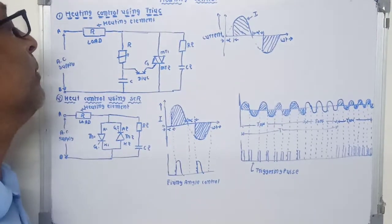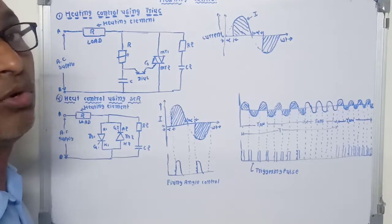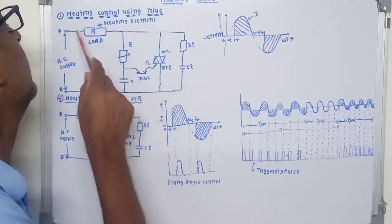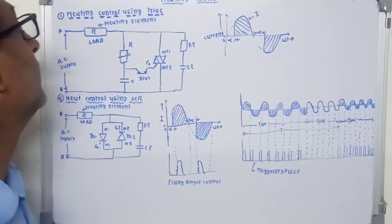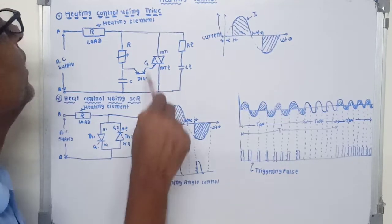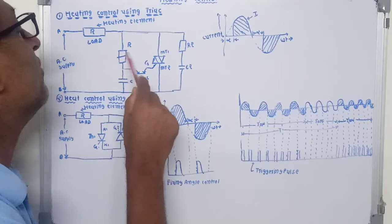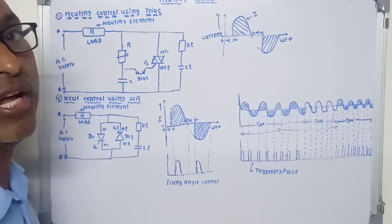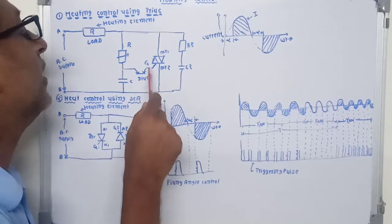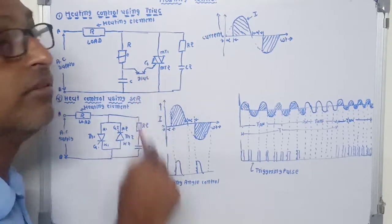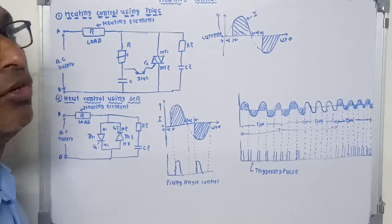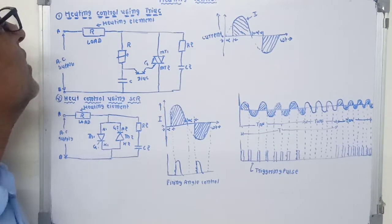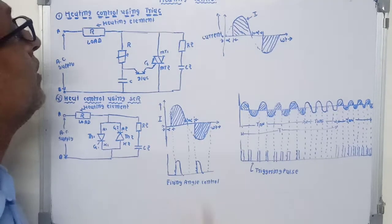The reverse-charged capacitor discharges through the gate and MT2 terminal of the TRIAC, turning it on. Current flows in the reverse direction from terminal B, to MT2, then MT1, then through the load, to terminal A. Heating control is achieved by changing the value of the variable resistance. If resistance is increased, the capacitor takes more time to fully charge, which increases the firing angle, causing the TRIAC to turn on late. The current through the heating element decreases, reducing the heat produced.